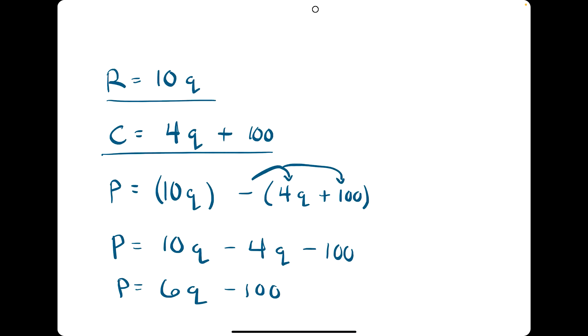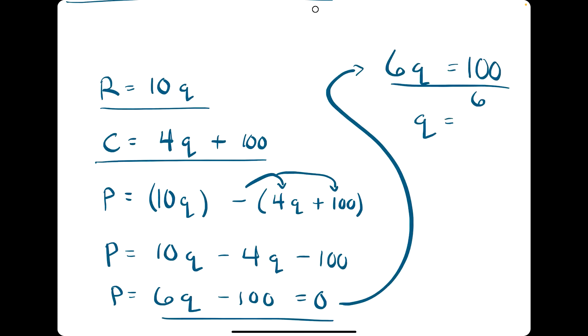So if we want to know where we break even, all we need to do is set this profit expression equal to zero and solve this for q. Adding 100 to the other side and dividing by 6, we get approximately 16.7 mugs.